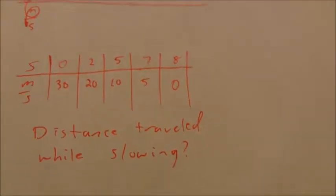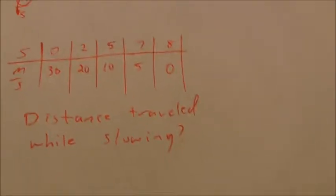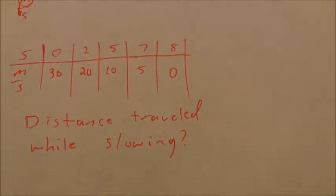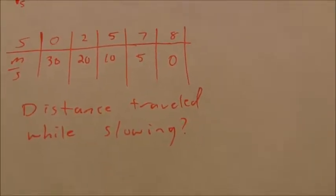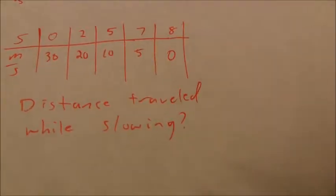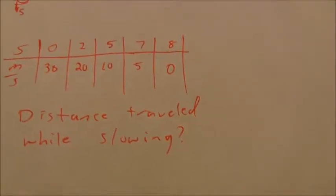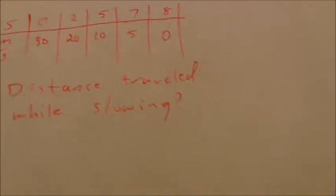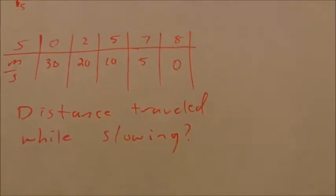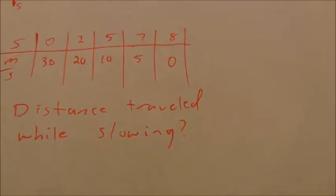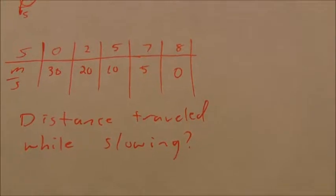You can also use the trapezoidal rule if you're given a table of values. I would suggest making a quick graph — it doesn't really have to be to scale. If I have a table showing different times and the meters per second something's traveling, the meters per second are dropping, so this looks like a car or ball that's slowing down over time. We can only approximate the distance traveled because we don't know if the slowing was consistent.